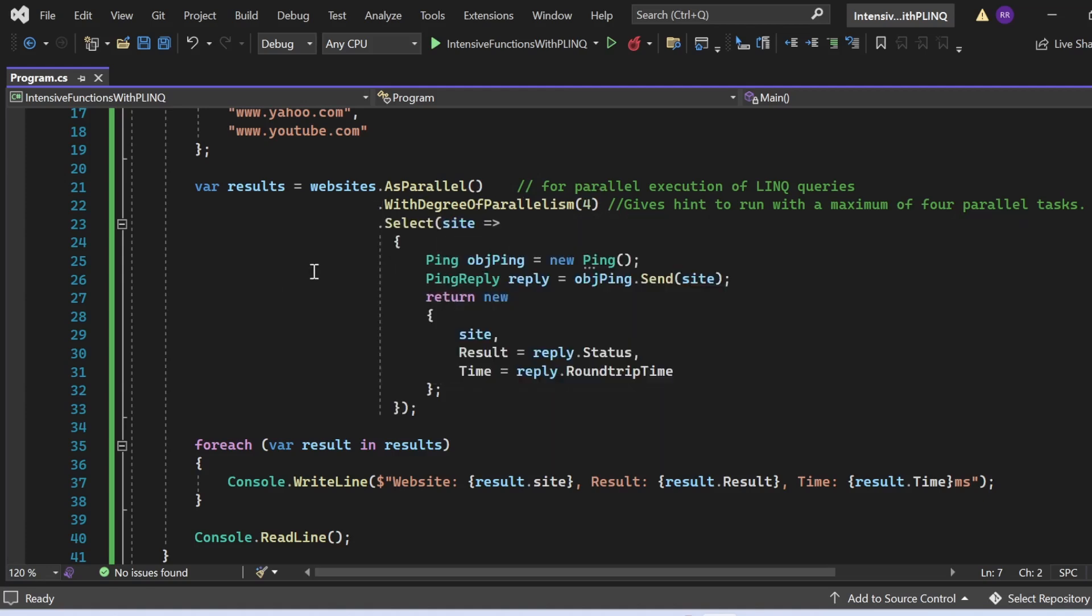Then there is a Select operation where for each site, I am creating an object of the Ping class. That's what I have written: ping objPing = new Ping(). Then I am going to ping a website with the help of the Send method: objPing.Send(site).